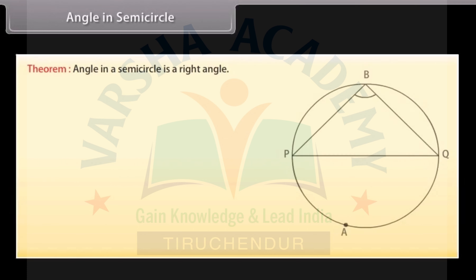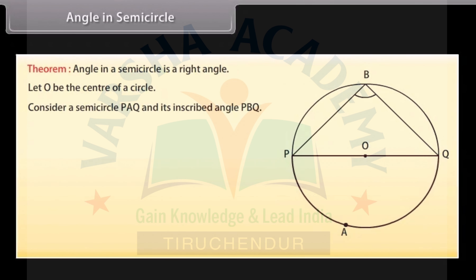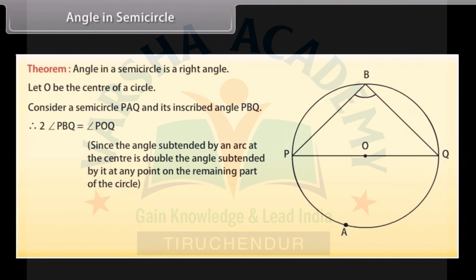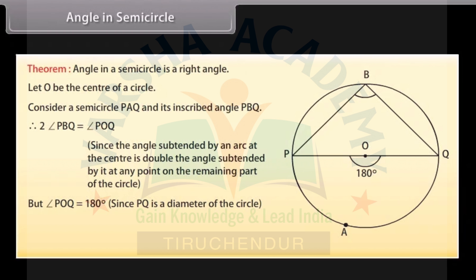Angle in a semicircle. Theorem: angle in a semicircle is a right angle. Let O be the center of a circle. Consider a semicircle PAQ and its inscribed angle PBQ. Then 2 angle PBQ equals angle POQ, because the angle subtended by an arc at the center is double the angle subtended at any point on the remaining part. But angle POQ is 180 degrees because PQ is a diameter. Therefore 2 angle PBQ equals 180 degrees, so angle PBQ equals 90 degrees.